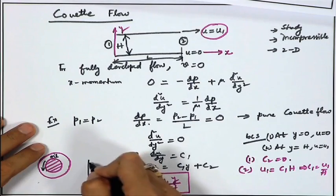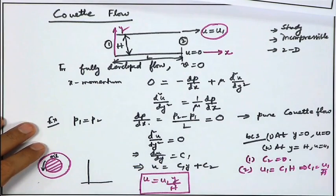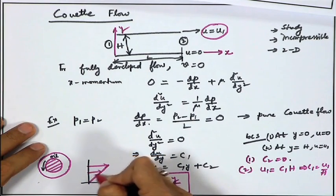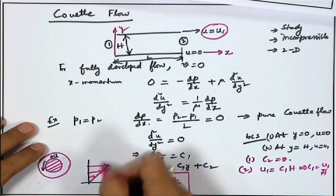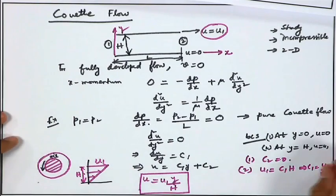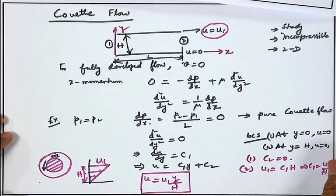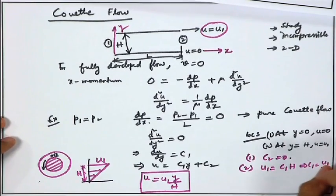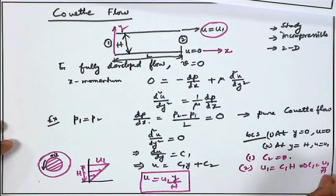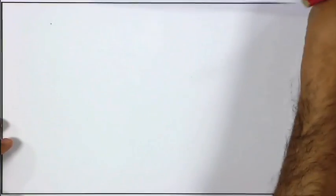The velocity profile is: u = (u1/h)·y, which is linear from 0 to u1 over the gap h. Now, what happens when both a pressure gradient and driving shear act on the system — the plates are moving and p1 − p2 is non-zero? Let us work out a problem in this case.